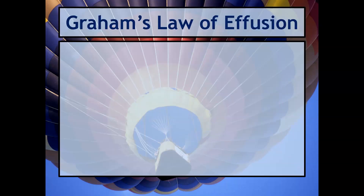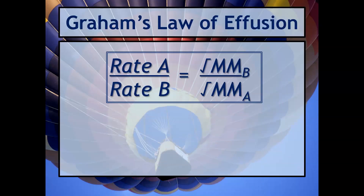Here is Graham's law — don't be intimidated. We've got the rate of gas A on top over the rate of gas B on the bottom, and since it's inverse, we have the square root of the molar mass of B over the square root of the molar mass of A. You could alternatively write one large square root sign over the whole fraction, but this is the easiest way to show it in the presentation.